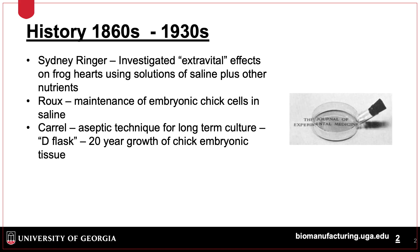The first examples of cell culture were in the late 1800s with Sidney Ringer, who, building on the work of others, investigated what was called extra vital effects on frog hearts using saline and other nutrients. Other work includes Rowe's work on embryonic chick cells and the work of Carroll, who developed a flask for culture called the D-flask, which is the predecessor of the modern T-flask.